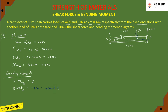So bending moment at C is minus 6 into 4, which gives minus 24 kilonewton meter. Next, bending moment at D is negative. The distance from B to D is 8 meters, so 6 into 8 is 48. Next, point C is minus 6 into 4 meters. So bending moment at D simplifies to minus 72 kilonewton meters.